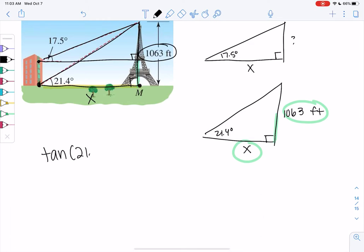Tangent of 21.4 degrees is opposite, 1063, over adjacent. And so we'll get 1063 over tangent 21.4 is X. Cross multiply or multiply by X and then divide.